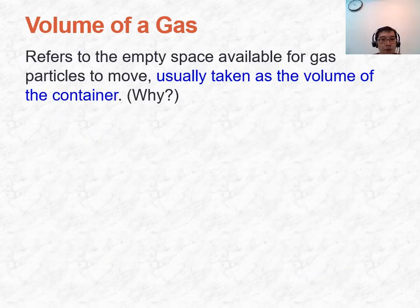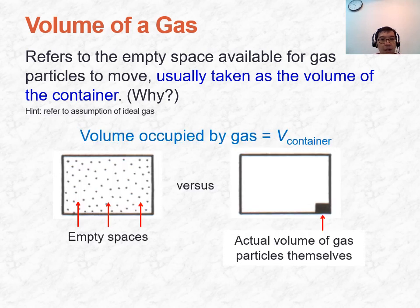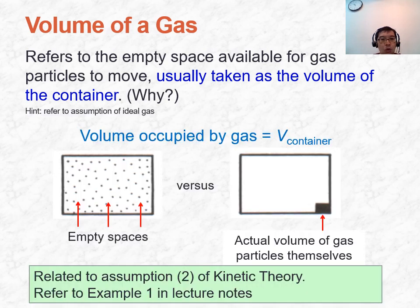The next variable is the volume of a gas, which refers to the volume of the container. This is related to assumption number two under the kinetic theory of gases, as shown in the previous calculation.